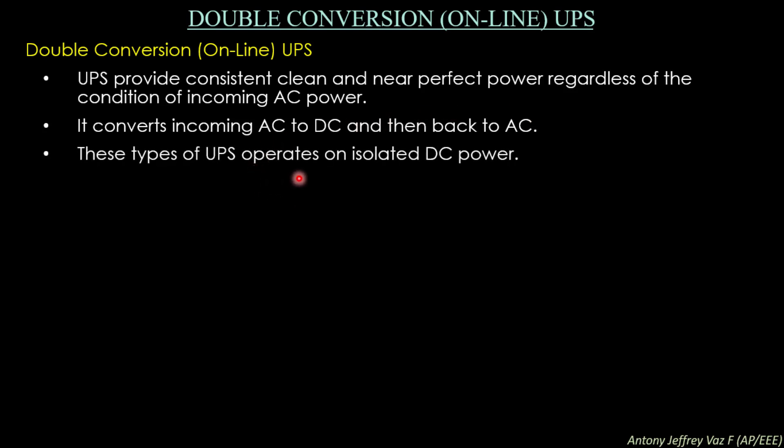Double conversion online UPS operates on isolated DC power. It is used whenever you need a machine to be isolated and to run for several days without interruption. These UPS also have a battery unit. When there is a complete interruption of AC power, the UPS immediately switches to battery power and continues to run the connected device.